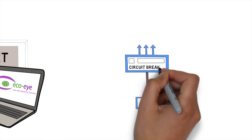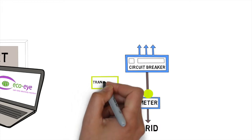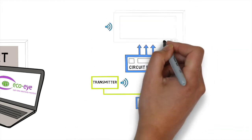They are easy to fit. The sensor clips around the cable from the meter and plugs into the transmitter. The display is wireless and can go anywhere in your house.